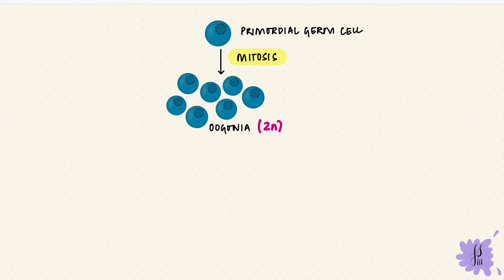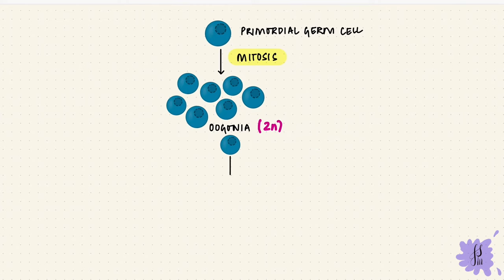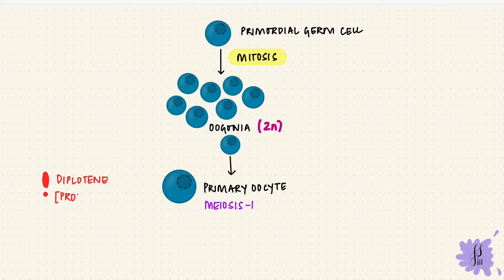The oogonia undergo mitosis to form more oogonia until around five months of gestation. After that, some degenerate, but those that remain undergo the first meiotic division and become primary oocytes. However, they get arrested in prophase one of meiosis, specifically during the diplotene stage. This meiotic arrest is the situation at birth. Everything up to this point occurs before birth, and the primary oocytes stay in this arrested stage until puberty.